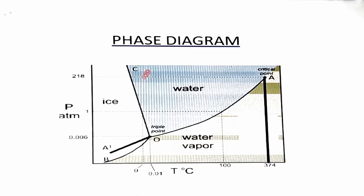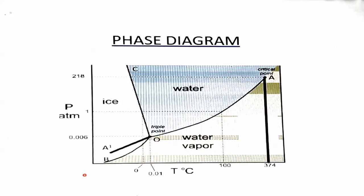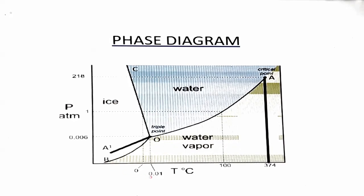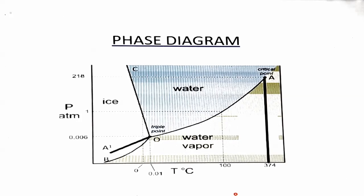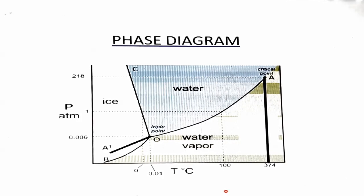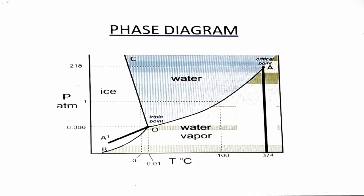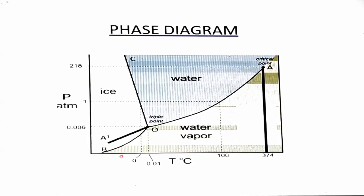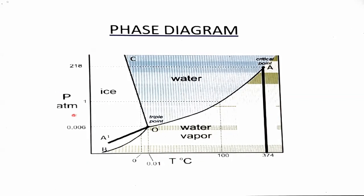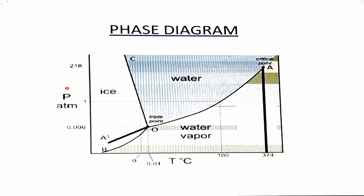This is the phase diagram of the water system. Water system means all three phases of water in equilibrium — at what temperature, what is the triple point, what are the curves, what is the meaning of components — everything we will learn here. We have two axes: the x-axis represents temperature and the y-axis represents pressure.